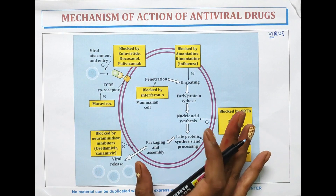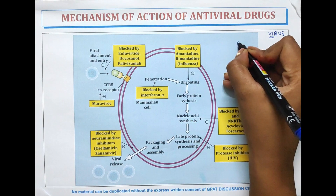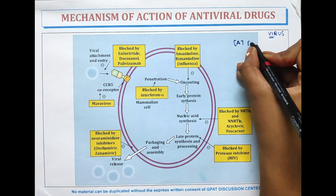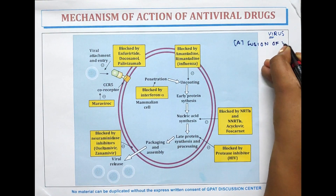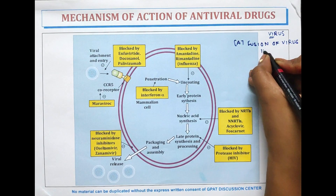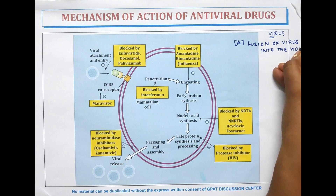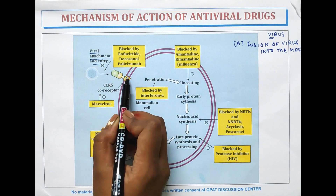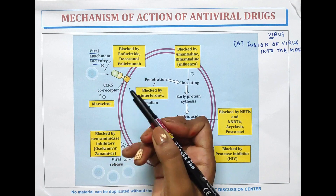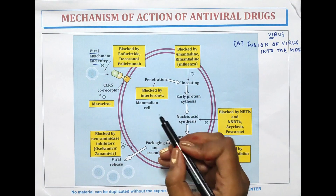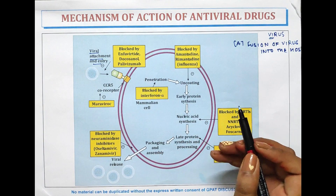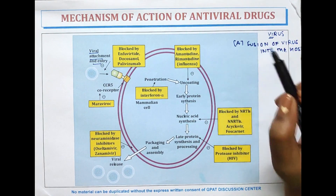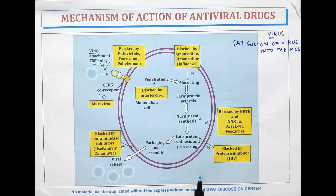The viral replication has a process. The first step is that the virus gets fused with the host cell membrane — fusion. Suppose this is the host; the virus attaches and gets entry into the cell membrane. Then after the fusion of virus into the host, it gets uncoating — it removes its outer layer. After uncoating, early protein synthesis occurs.